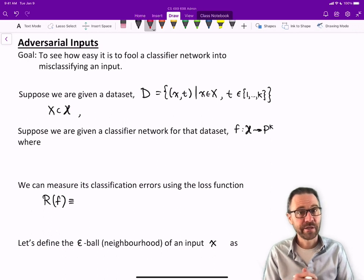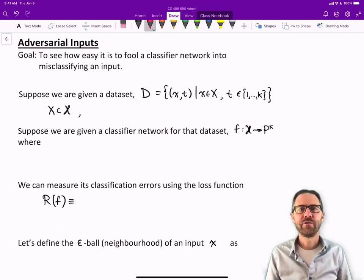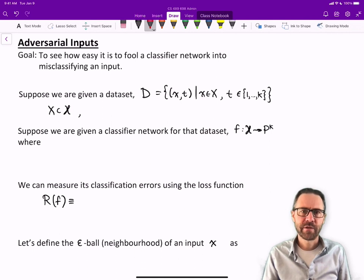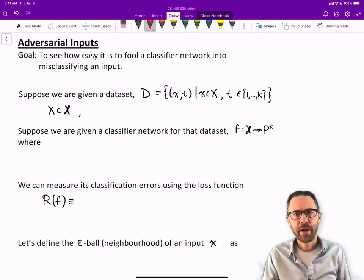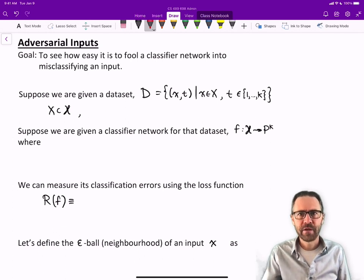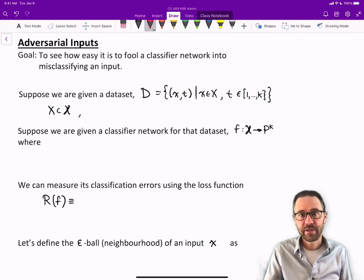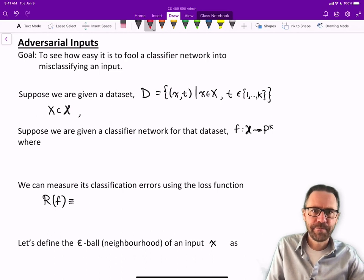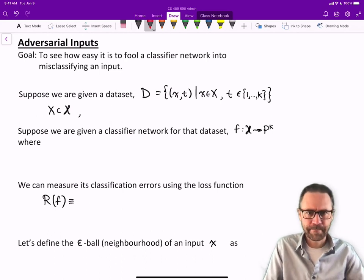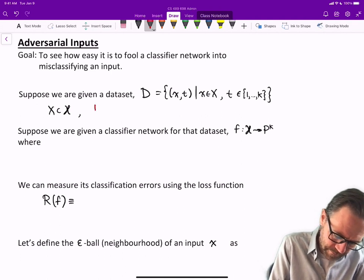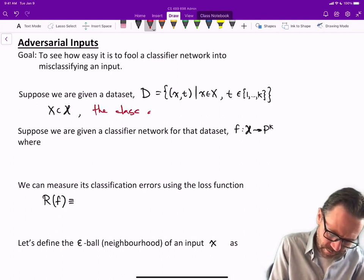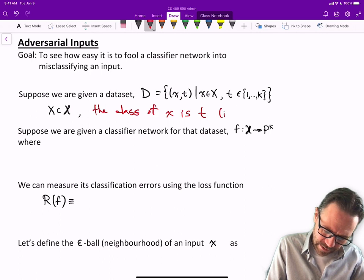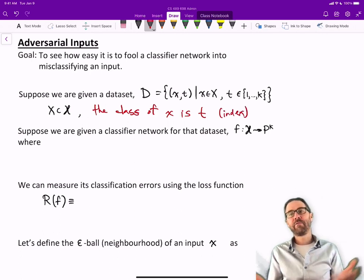The goal is to see how easy it is to fool a classifier network into misclassifying an input. Suppose we're given a dataset D, which is composed of a bunch of input-target pairs, X taken from some set capital X and targets T, where T is an index. The class of X is T, an index like one, two, three, four, five, up to 10 or whatever.